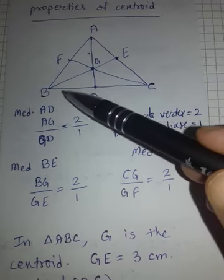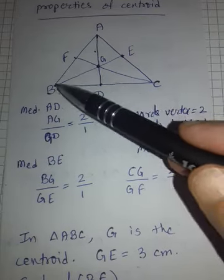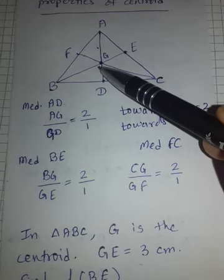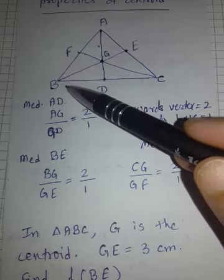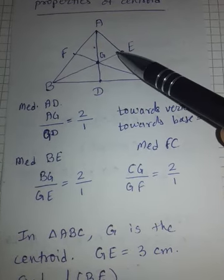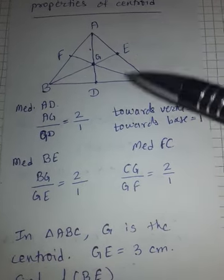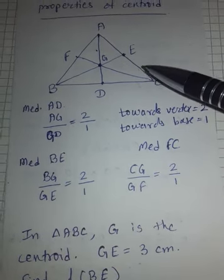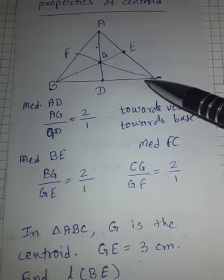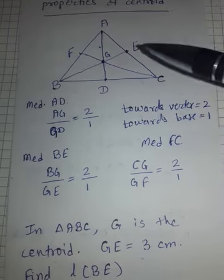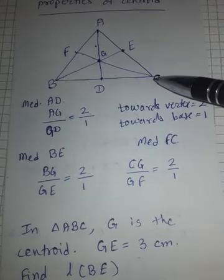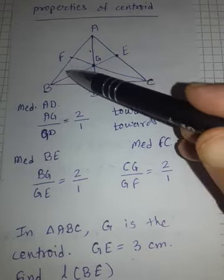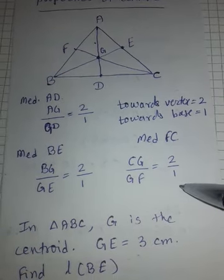Similarly, if I talk about median BE, the part towards the vertex is BG, so BG upon GE is 2:1. And if I talk about median CF, then the part towards vertex CG upon GF is also 2:1.